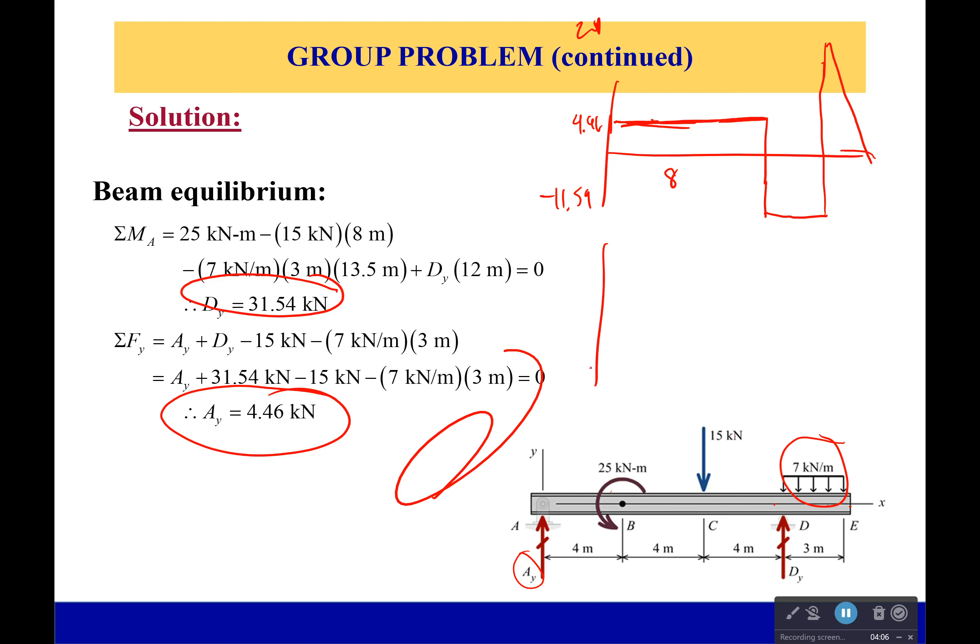So our moment diagram is going to be using this as its slope. So since this is a constant but positive value, I'm going to have a constant but positive slope. And then suddenly, I'm going to reach that 25 kilonewtons. Now what does that do? Well, it is counterclockwise. So, since it's counterclockwise, it's going to do what? We're going to drop down.